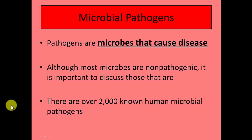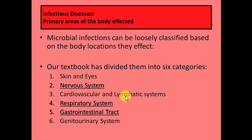Microbial pathogens are microbes that cause disease. Most microbes are not pathogenic — only about 5%, give or take — which still makes up over 2,000 human pathogens. So there are millions of microbes out there, and a couple thousand cause disease. Our textbook has classified the types of pathogens that affect humans based on the body systems they infect: skin and eyes, nervous, cardiovascular, respiratory, gastrointestinal, and others.